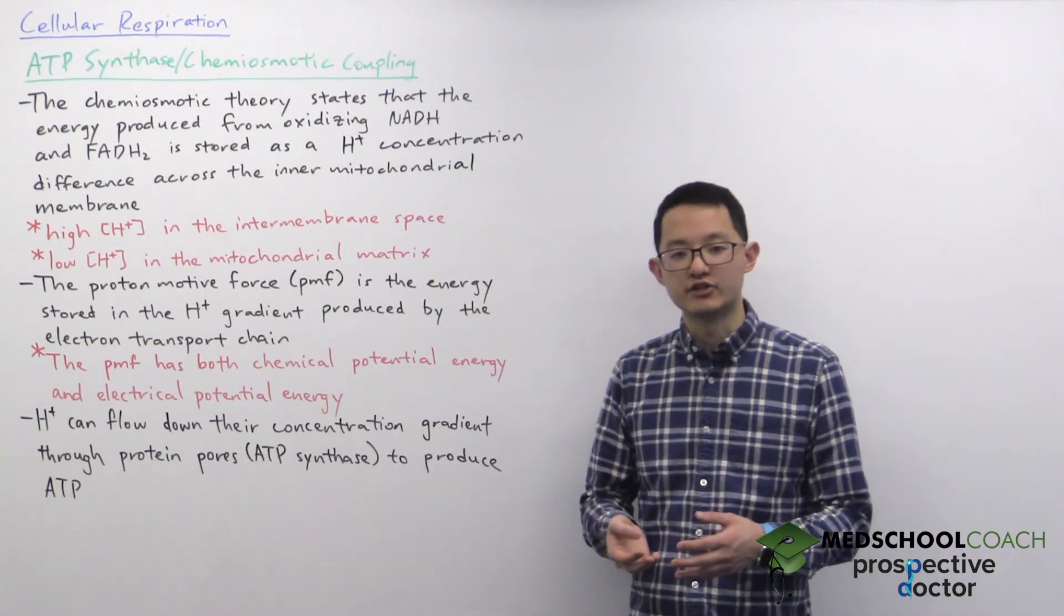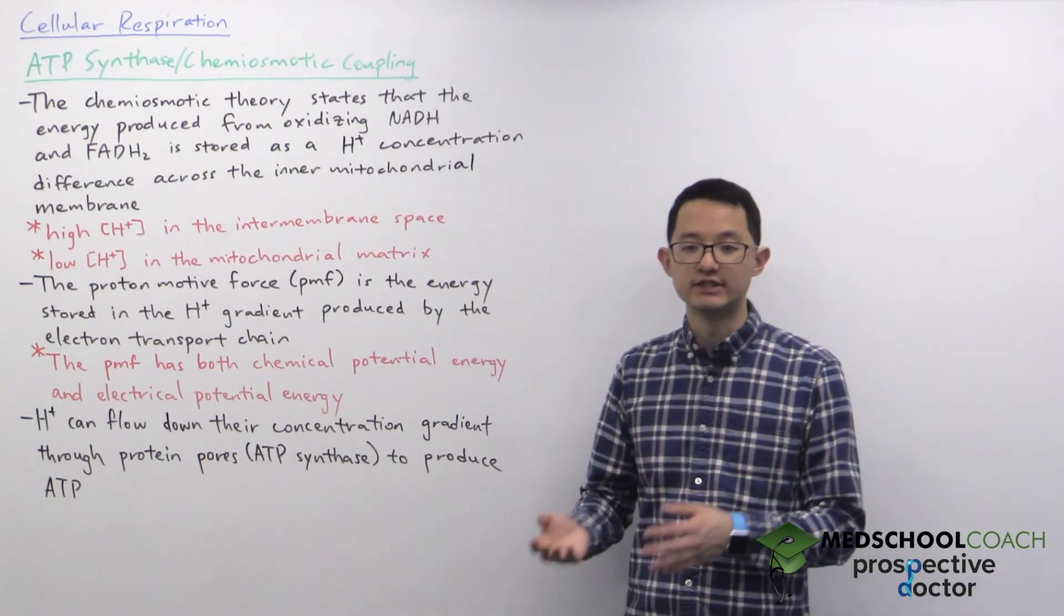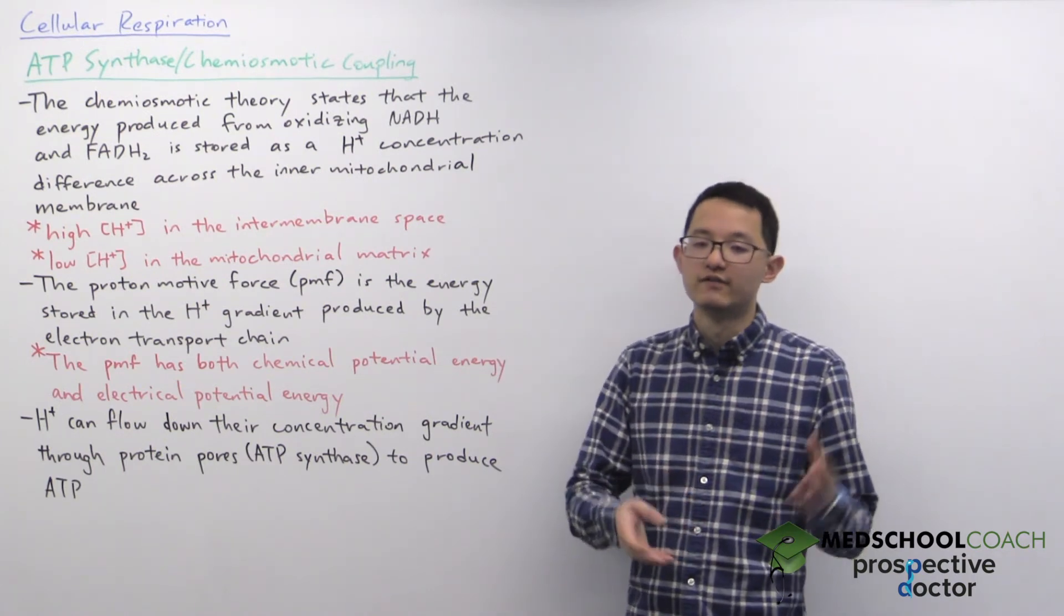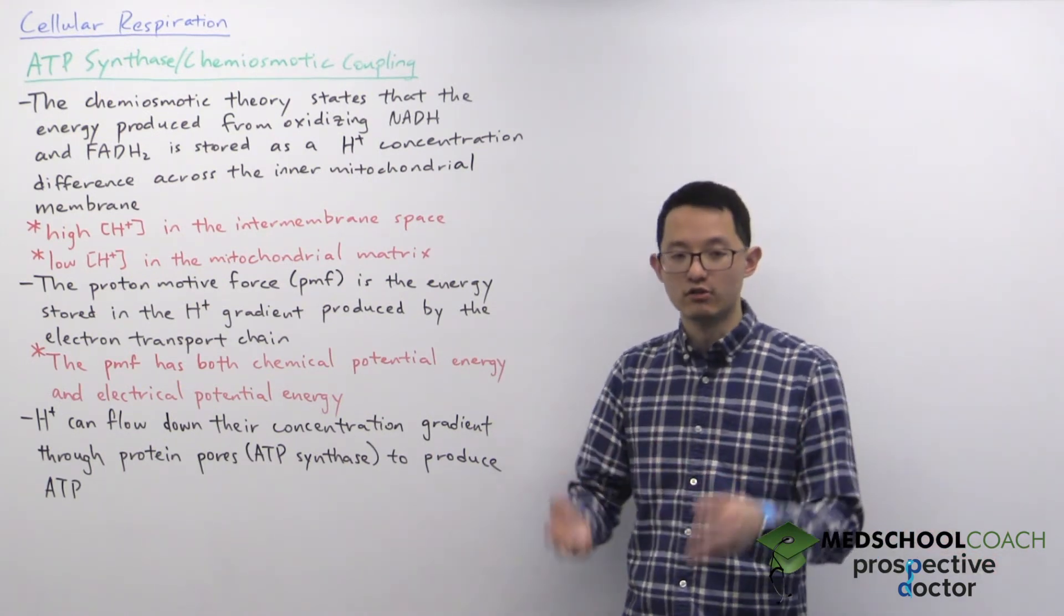So the chemical potential energy is due to the concentration difference that chemicals naturally want to flow from higher concentration to lower concentration.